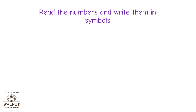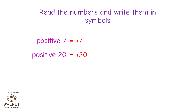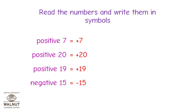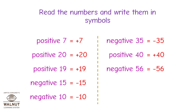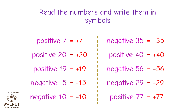Read the numbers and write them in symbols. Positive 7 is equal to plus 7. Positive 20 is equal to plus 20. Positive 19 is equal to plus 19. Negative 15 is equal to minus 15. Negative 10 is equal to minus 10. Negative 35 is equal to minus 35. Positive 40 is equal to plus 40. Negative 56 is equal to minus 56. Negative 29 is equal to minus 29. Positive 77 is equal to plus 77.